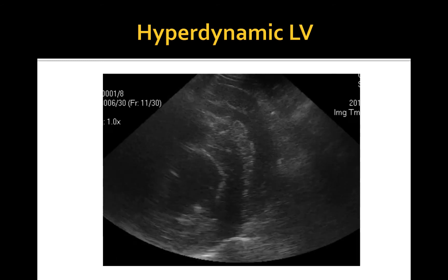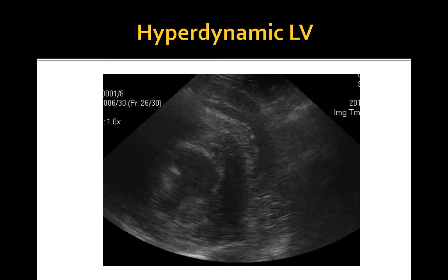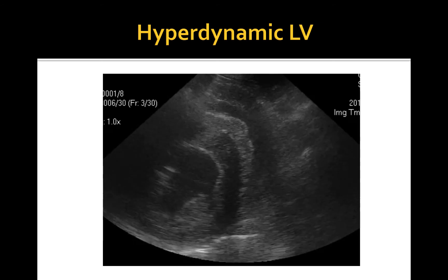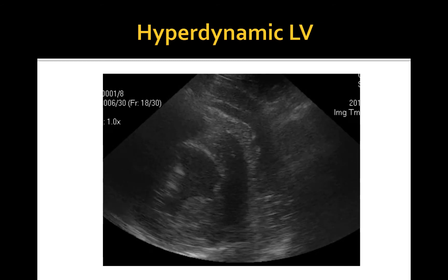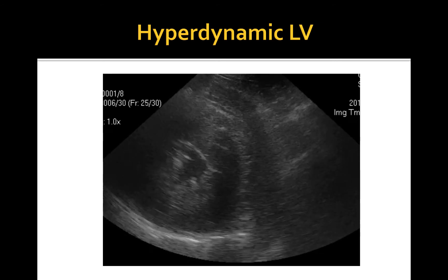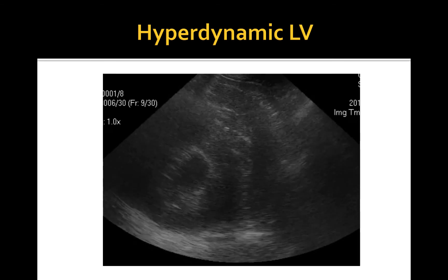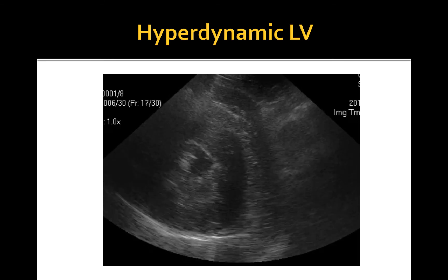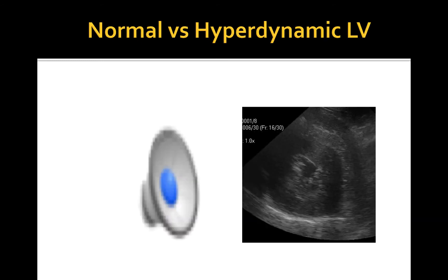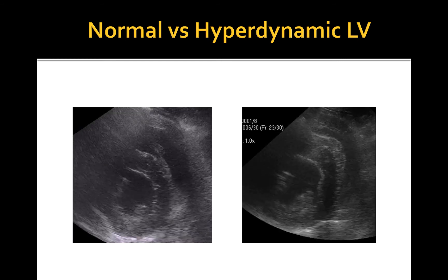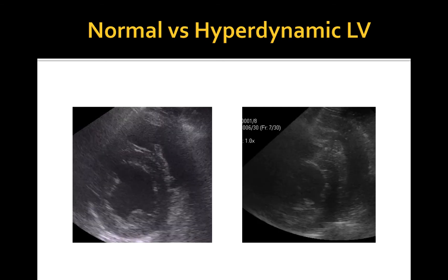Besides hypovolemic shock, hyperdynamic LV may occur in patients with distributive shock or a global vasodilatory state. Arterial vasodilation causes decreased afterload for the left ventricle, making its job much easier. In addition, commonly increased sympathetic tone during distributive shock further increases LV contractility. As a result of reduced afterload and endogenous catecholamines effects, LV may appear hyperdynamic in the absence of hypovolemia.